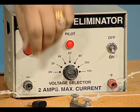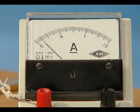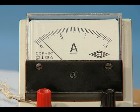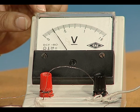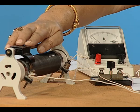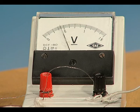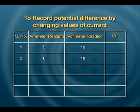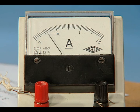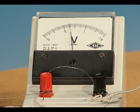Switch on the eliminator and put the key in. The ammeter reading is 5 divisions and the corresponding voltmeter reading is 10 divisions. We change the current using the rheostat: the ammeter reading becomes 8 divisions with a voltmeter reading of 12 divisions, and for another setting, the ammeter reads some divisions with the voltmeter showing 26 divisions.